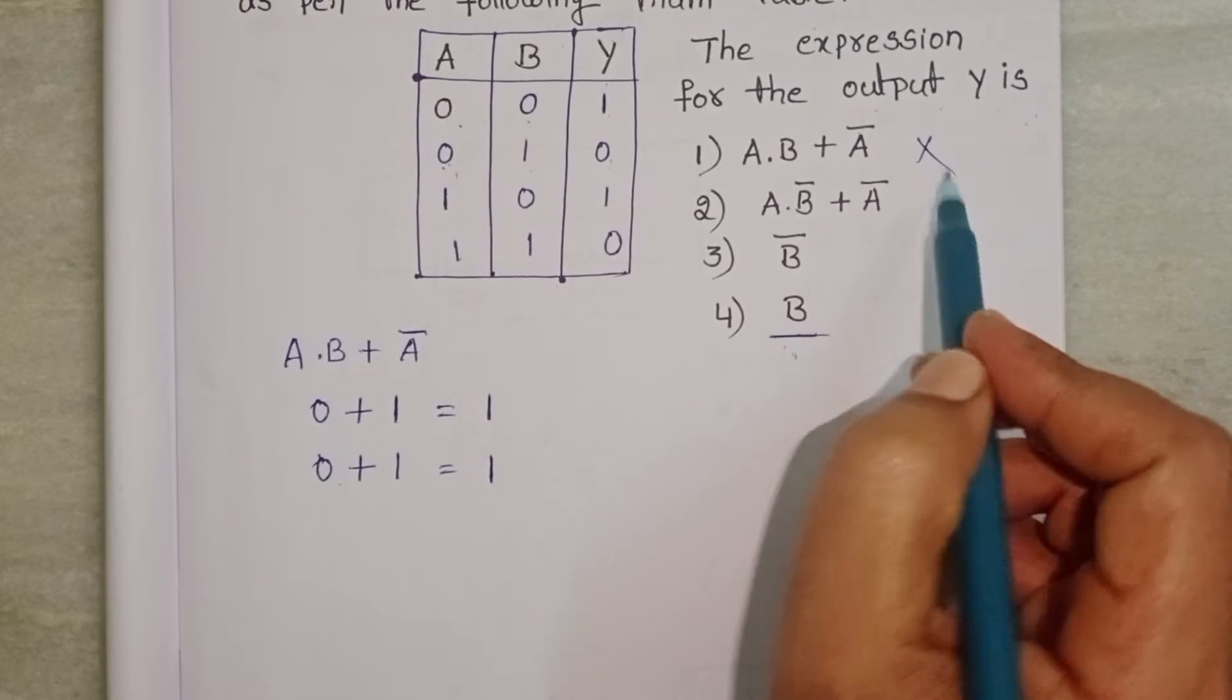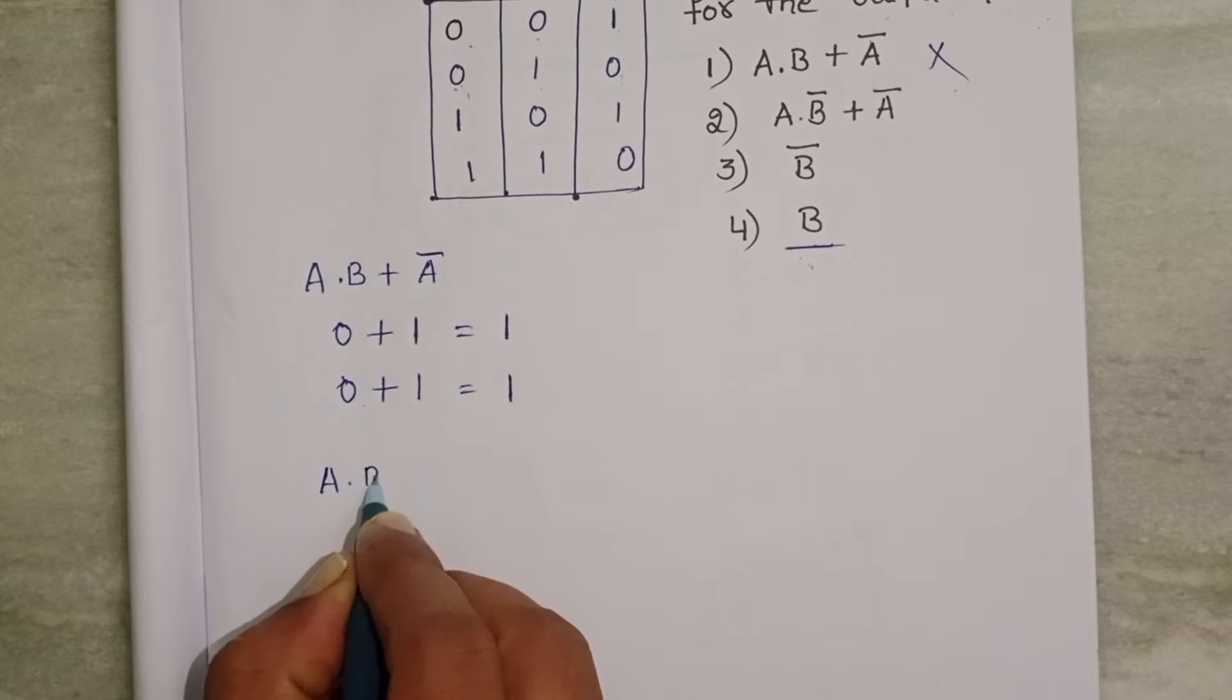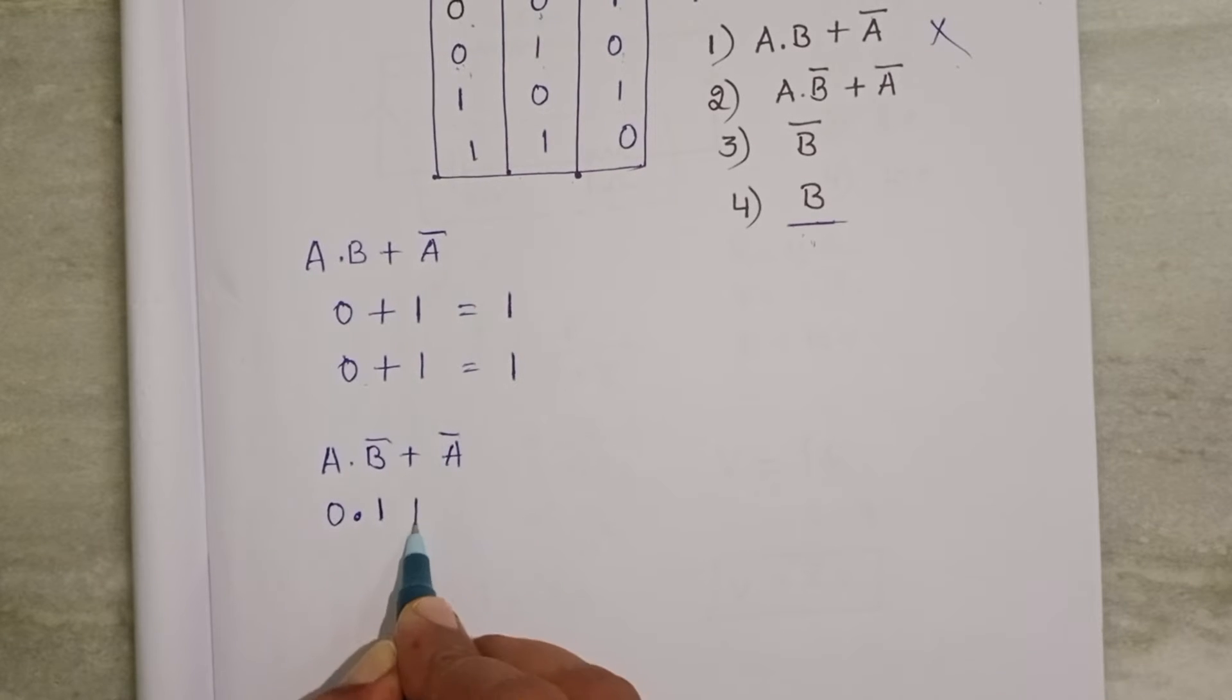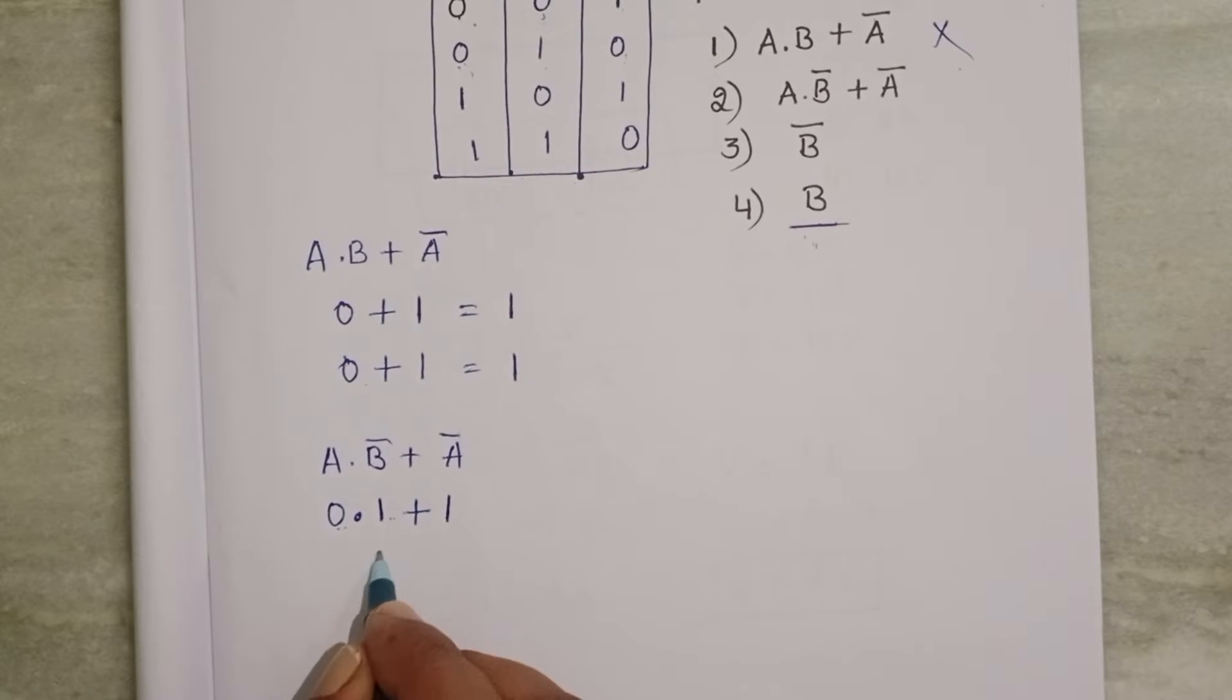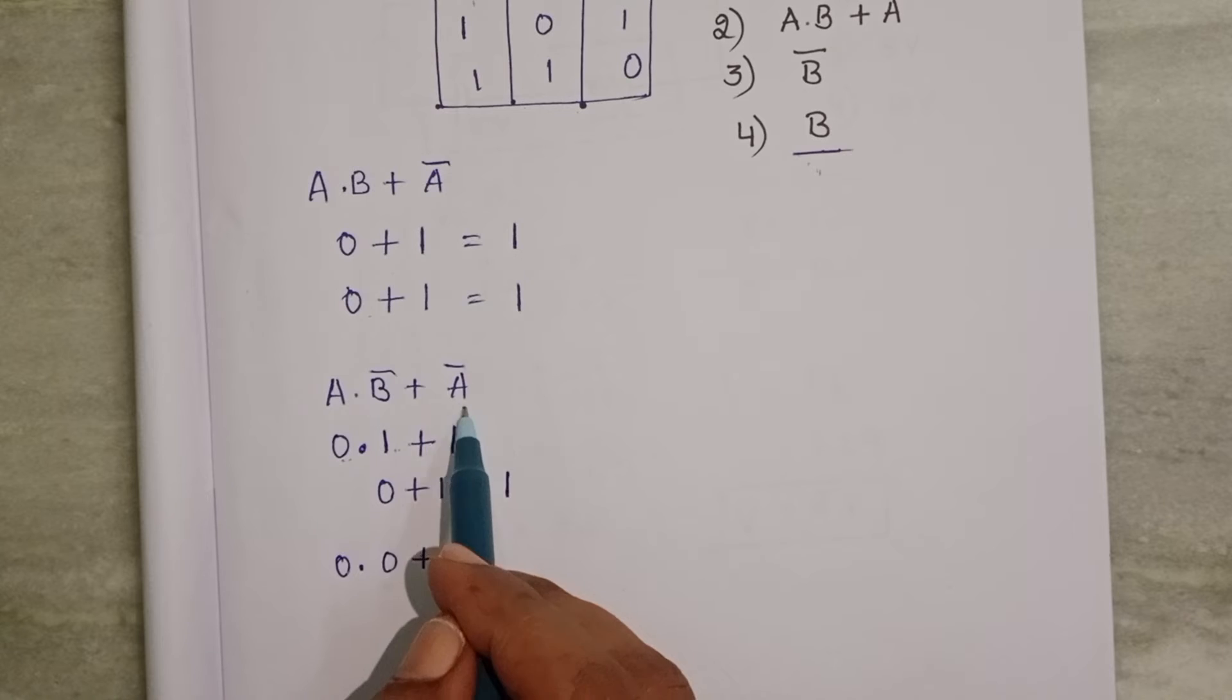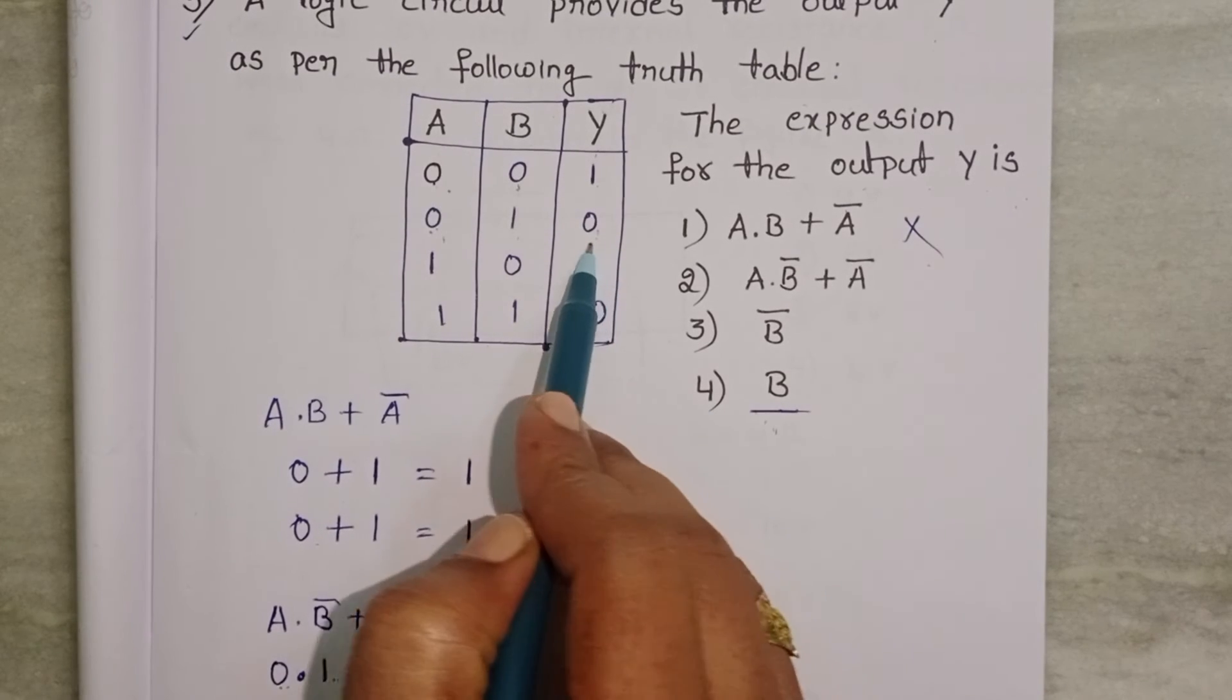First option is not the correct expression for the output. Let us check the second one also. a into b naught plus a naught. a is 0. Here b is 0 then b naught is 1. 0 into a naught is 1. 0 into 1. 0 plus 1 equals 1. 0 into 0, 0 plus 1 equals 1. Here output is 1 but here output is 0.